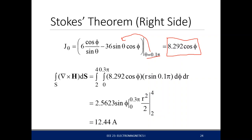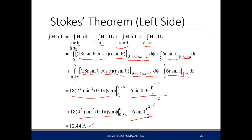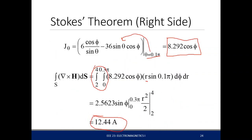Now we want to get the surface integral of that. The surface is bounded by phi from 0 to 0.3π and r from 2 to 4. Since the bounds are constant, you can separate the integrals — cosine phi integrates to sine phi, and r integrates to r-squared over 2. Evaluating gives the same enclosed current of 12.44 amperes.